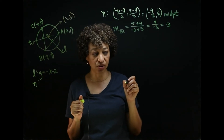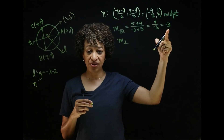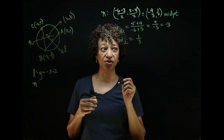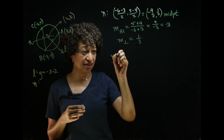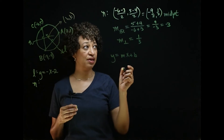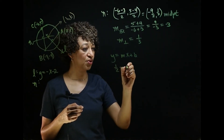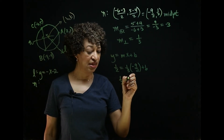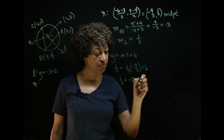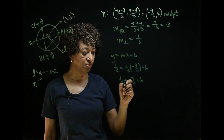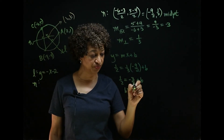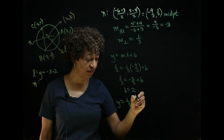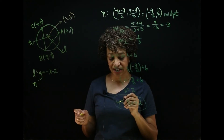We take the opposite reciprocal of negative three to get the slope of line N. The opposite of negative three is positive three, and the reciprocal of three is one-third, so the slope of line N is one-third. Plugging the slope and midpoint into y equals mx plus b: one-half equals one-third times negative nine-halves plus b, which gives one-half equals negative three-halves plus b, so b equals two. The equation of line N is y equals one-third x plus 2.